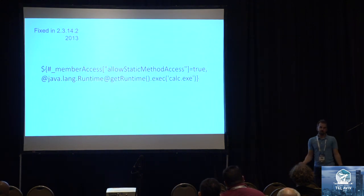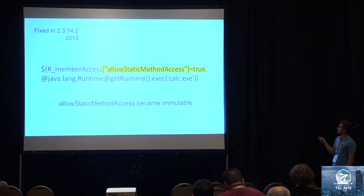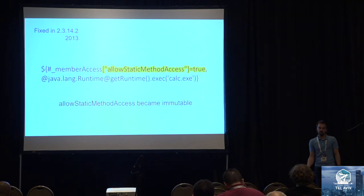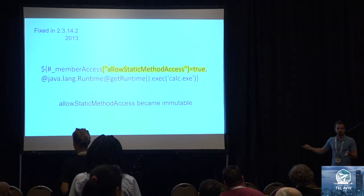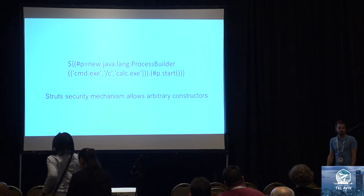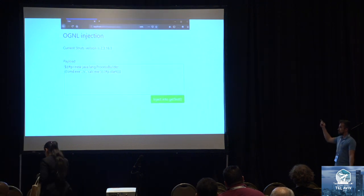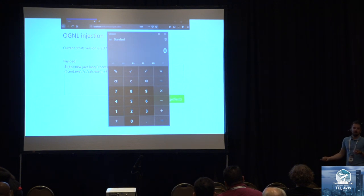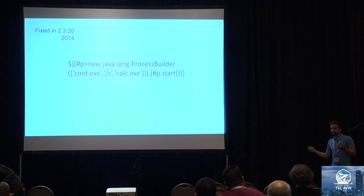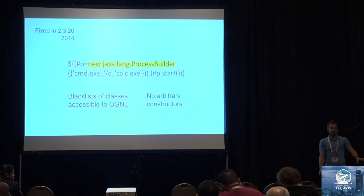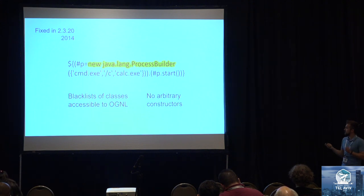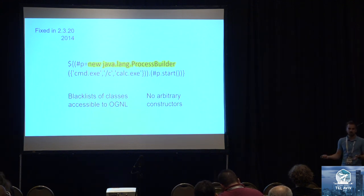The same year it was fixed. Developers made allowStaticMethodAccess immutable so I cannot change it anymore. But what if instead of calling a static method, I create a dynamic constructor — for ProcessBuilder, as you've seen before? Suddenly Struts' security mechanism allows it, so we have a new calc popping. This issue was fixed the next year: developers restricted OGNL from using arbitrary constructors and added a blacklist. As you know, a blacklist is a flawed approach to security — and you'll see why.